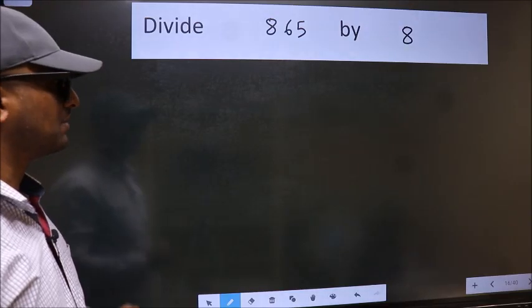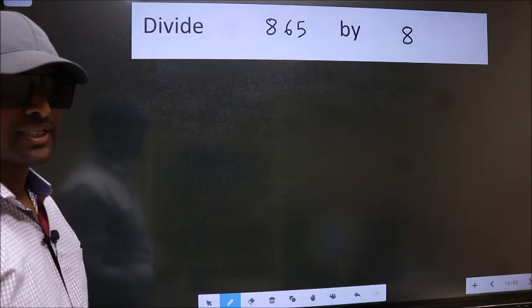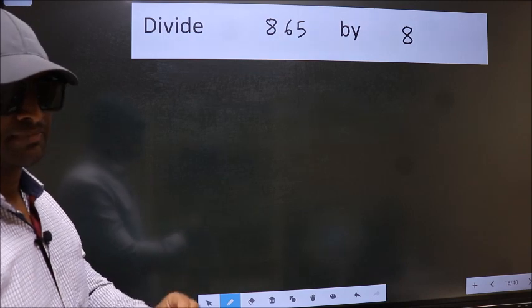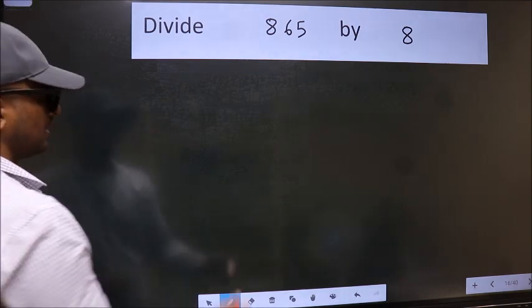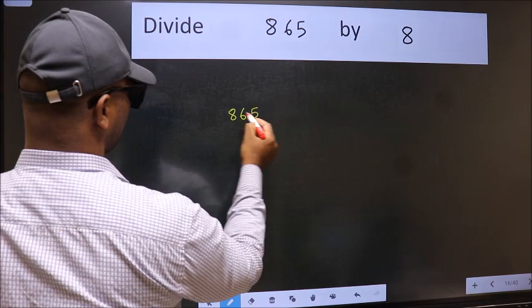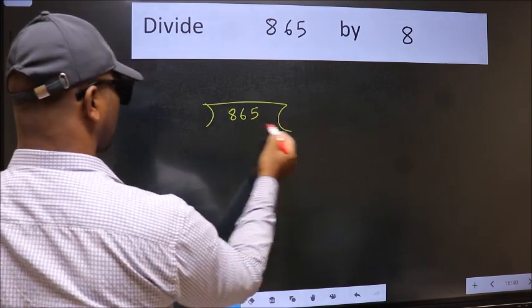Divide 865 by 8. To do this division, we should frame it in this way: 865 here and 8 here.